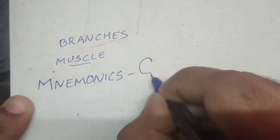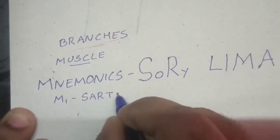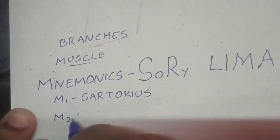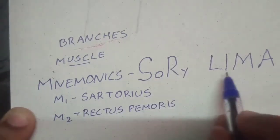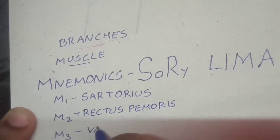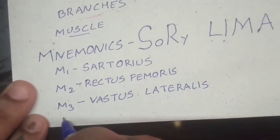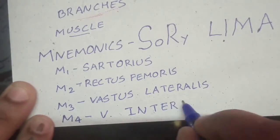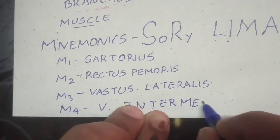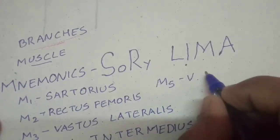The branches are given to muscles, and we can memorize these muscles with the mnemonic SRLIMA. M1 stands for sartorius, M2 for rectus femoris, M3 for vastus lateralis, M4 for vastus intermedius, and M5 for vastus medialis.